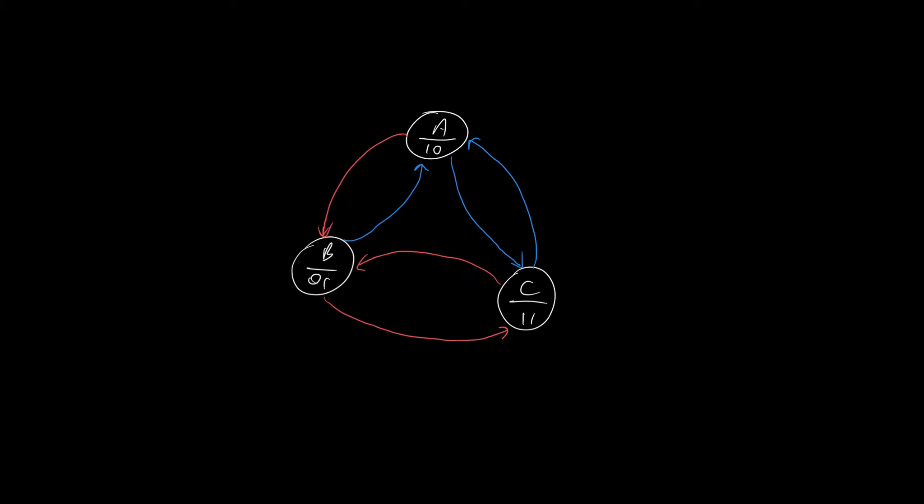To explain how we canonically implement a finite state machine in Verilog given a state diagram, I've drawn this random state diagram here.